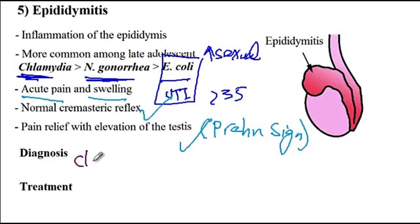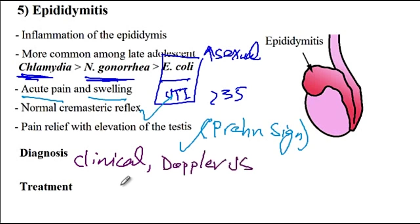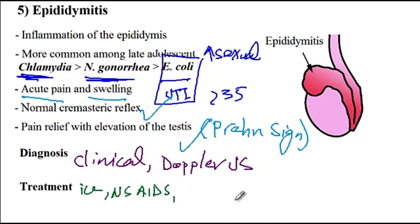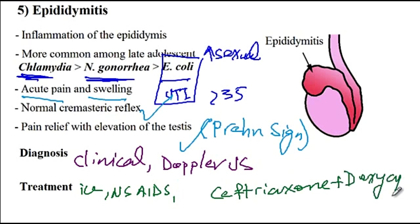For diagnosis, you can diagnose clinically or if unsure, use Doppler ultrasound. For treatment, you can provide patients with ice and NSAIDs to help with the pain, or elevate the testicles to relieve pain. You must also provide antibiotics directed at chlamydia and Neisseria gonorrhea: ceftriaxone for Neisseria gonorrhea and doxycycline for chlamydia. Azithromycin is another option for chlamydia, but due to increased resistance, doxycycline and ceftriaxone are recommended. That concludes our discussion of testicular abnormalities.